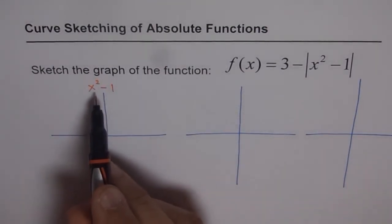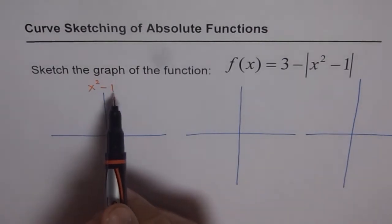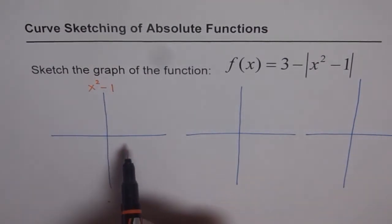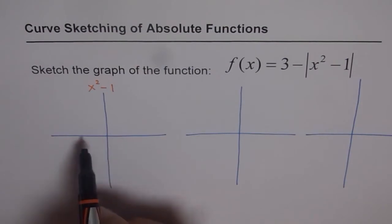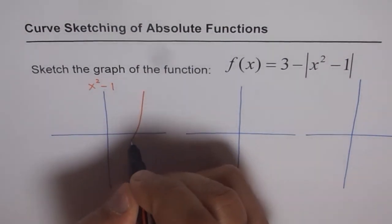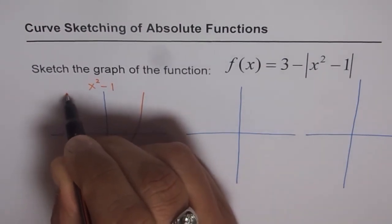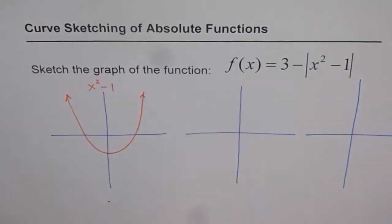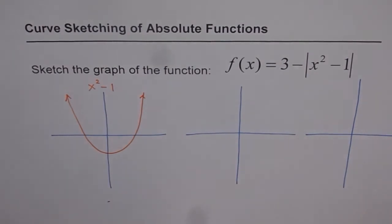Now x squared minus 1 is a parabola which is shifted one unit down. So its x-intercepts will be at plus and minus 1. So it should be kind of like this. So let me sketch a parabola like this. So that is kind of the graph for x squared minus 1.